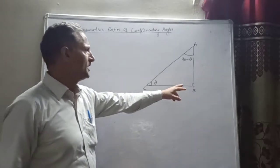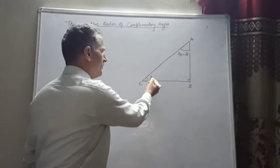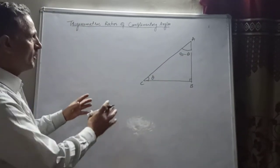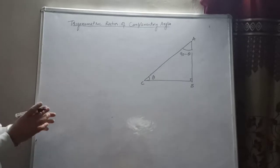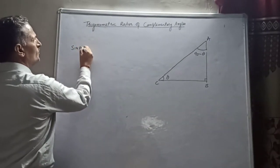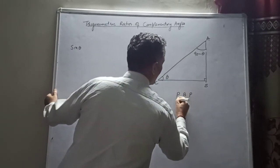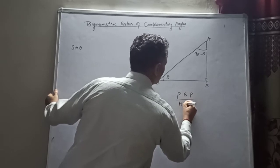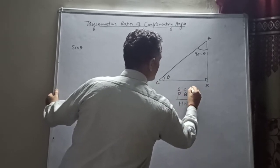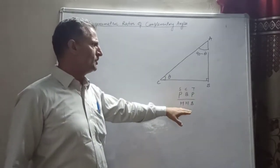Why? Because by the angle sum property, 90 plus theta plus (90 minus theta) equals 180 degrees. So if you write down theta, the complementary angle will be 90 minus theta. Now, to recall — for sine you write perpendicular over hypotenuse, for cosine it is base over hypotenuse, and for tangent it is perpendicular over base. Some people use the mnemonic 'some people have curly black hair' to remember this.